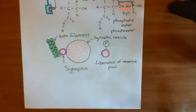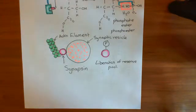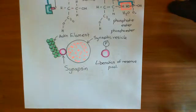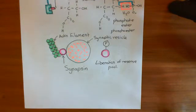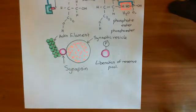Welcome to this next video in which we are discussing the release of neurotransmitter. So far what we've done is we've seen how calcium coming into the cell upon an action potential arriving in the axon terminal leads to both the fusion of the docked vesicles, which are in the readily releasable vesicle pool, and also the liberation of the vesicles which are attached to actin filaments in the reserve vesicle pool.